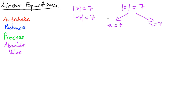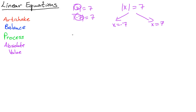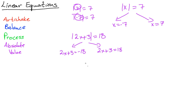If you have |x| = 7, to undo absolute value you split it into two equations: x = 7 or x = −7. For something like |2x + 3| = 18, first get the absolute value by itself, then split into 2x + 3 = 18 and 2x + 3 = −18, and solve each. Subtracting 3 gives 2x = 15 so x = 15/2, or 2x = −21 so x = −21/2.